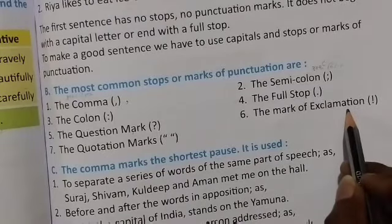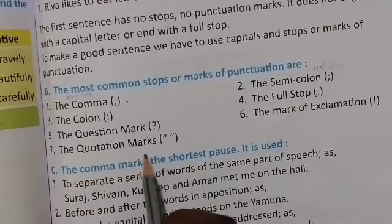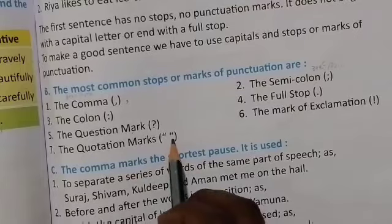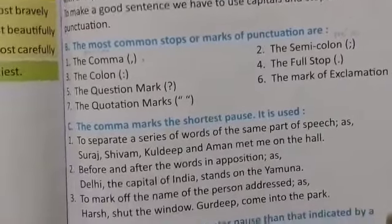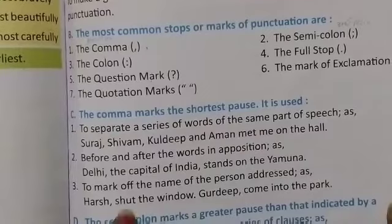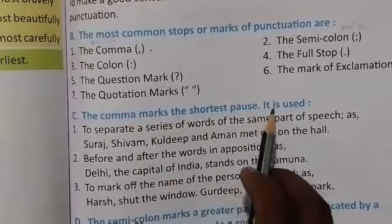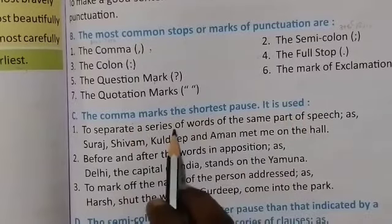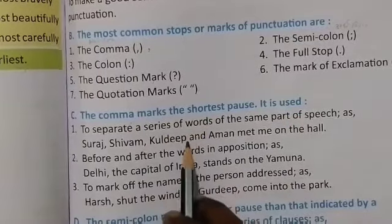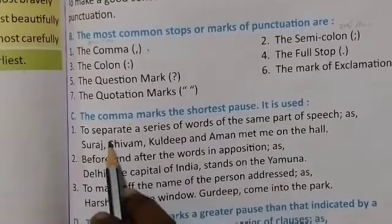Exclamation mark — vishmayadibodhak chinh — जिसे हम exclamation mark बोलते हैं। Then next: the quotation mark, जिसे हम inverted comma भी बोलते हैं। Now next: the comma marks the shortest pause. जो comma है, वह एक छोटा pause है — थोड़ी देर के लिए हम रुकते हैं।